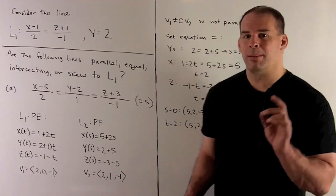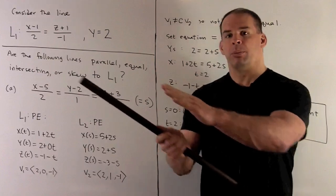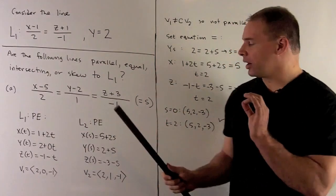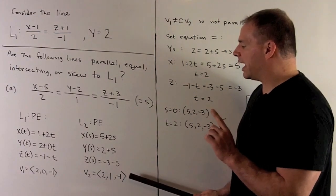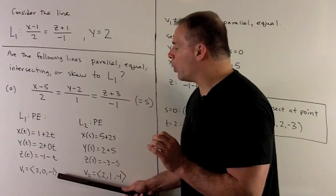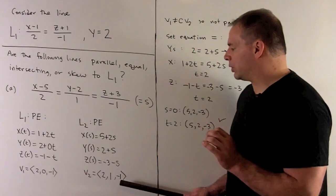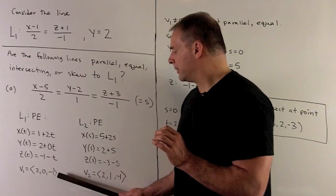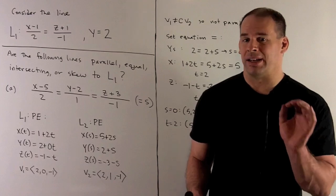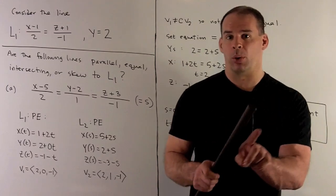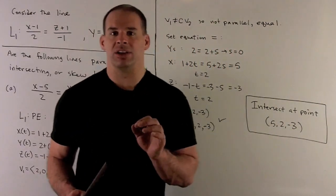First, we check if the lines are parallel — that would require the direction vectors to differ by a constant multiple. But if we multiply anything by v1 = (2, 0, -1), the second component is always 0, so v2 = (2, 1, -1) cannot be a constant multiple of v1. The lines are not parallel, and therefore also not equal, since equal lines must point in the same direction. That leaves intersecting or skew.